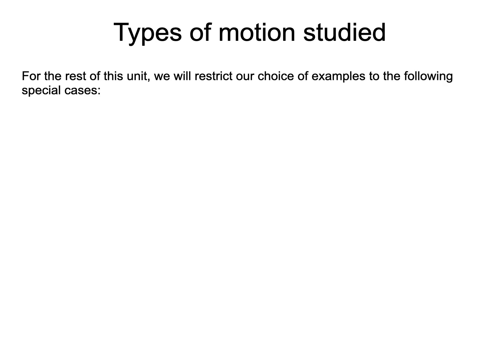In this lecture, we will go over many examples that make use of Newton's Second Law. However, we will restrict ourselves to a special set of examples. We will only look at motion along a line or at objects at rest. So, for example, we will be avoiding general projectile motion and circular motion.